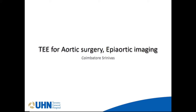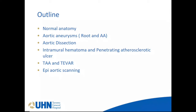Today I've been doing this topic for the last few years: TEE for Aortic Surgery and Epiaortic Imaging. Briefly, the outline: I'll talk about normal anatomy, aortic aneurysms — the root aneurysm and ascending aorta — aortic dissection, intramural hematoma, and penetrating atherosclerotic ulcers. I'll also talk briefly about thoracoabdominal aneurysm, TVAR, and use of TEE in these situations, and briefly about epiaortic scanning.